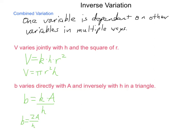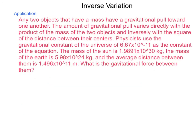One such application that I know of is in the world of physics. Any two objects that have a mass have a gravitational pull toward one another. The amount of gravitational pull varies directly with the product of the masses of the two objects and inversely with the square of the distance between their centers. Physicists use the gravitational constant of the universe, 6.67 times 10 to the negative 11th, as the constant of the equation. The mass of the sun is 1.9891 times 10 to the 30th kilograms. Mass of the earth is 5.98 times 10 to the 24th kilograms. And the average distance between them is 1.496 times 10 to the 11th meters.